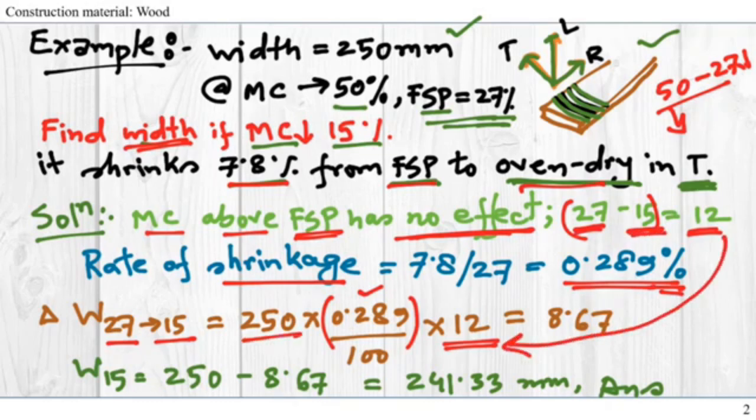This is from FSP to 15%, so that is 12. And the original thickness - because the rate of change percent is per millimeter or if the unit is given in centimeters, it would be in centimeters. So I have to multiply it with the total width to get the total width loss.